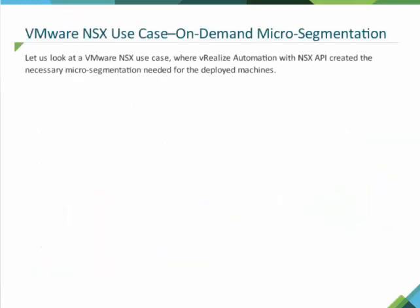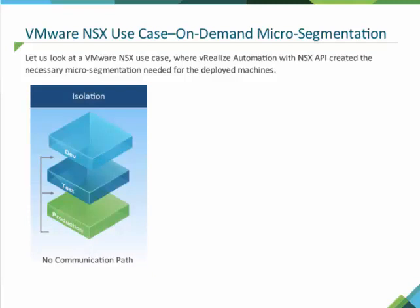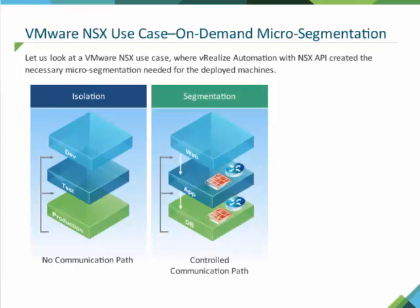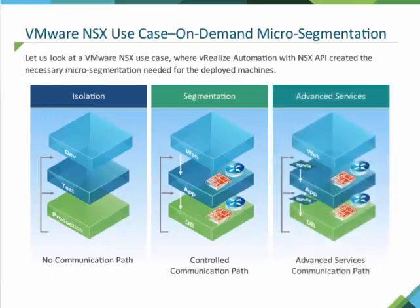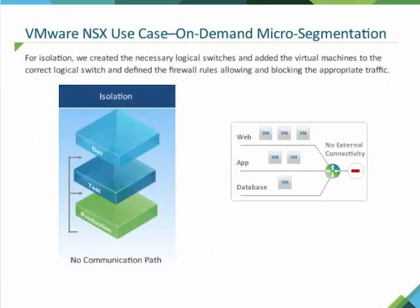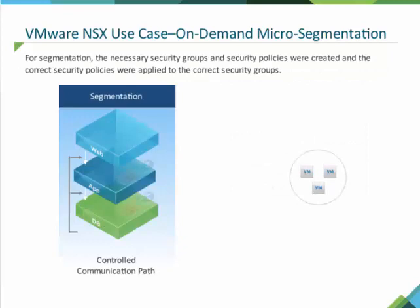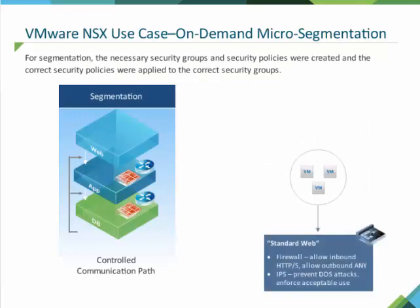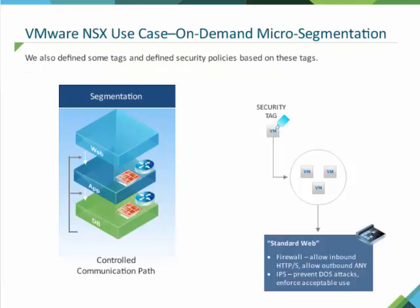In a VMware NSX use case, vRealize Automation with NSX API created the necessary micro-segmentation for deployed machines. It created the necessary isolation for development, test, and production, and the segmentation needed for a tiered app — web, app, and database. The software also implemented the needed advanced services for each tier. For isolation, logical switches were created, virtual machines were added to the correct logical switch, and firewall rules were defined to allow and block appropriate traffic. For segmentation, the necessary security groups and security policies were created, correct policies were applied to the correct groups, and tags were defined with security policies based on those tags.